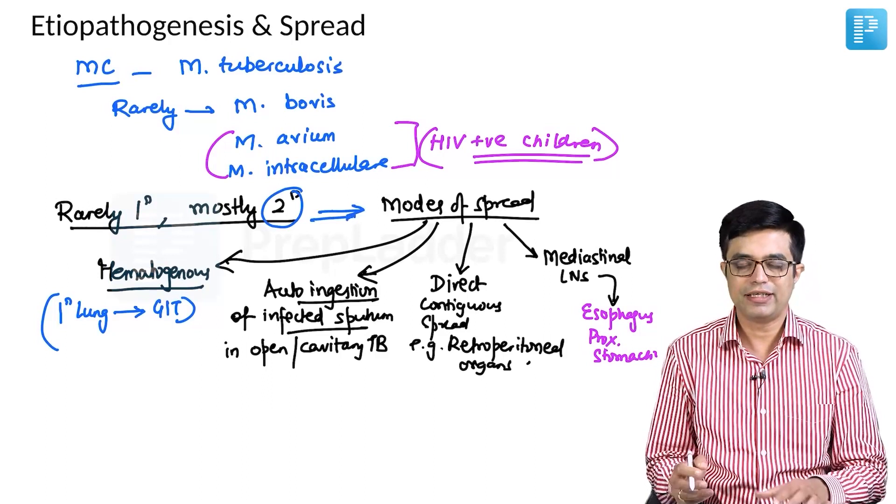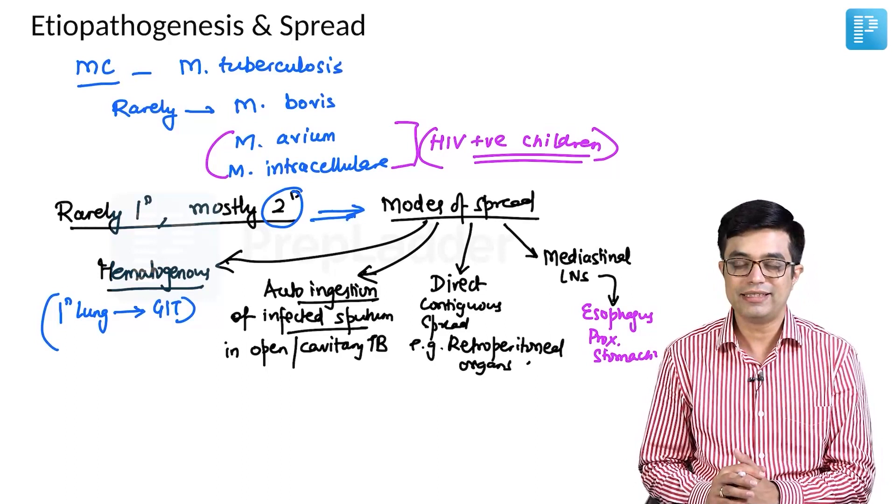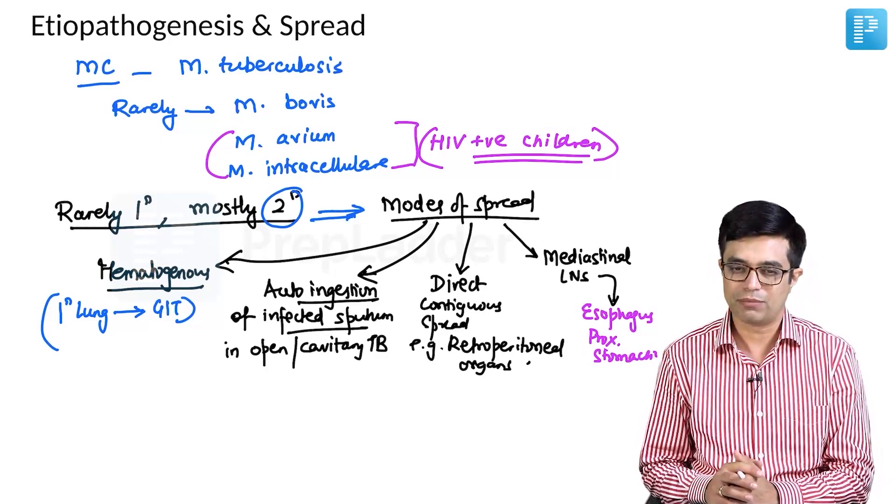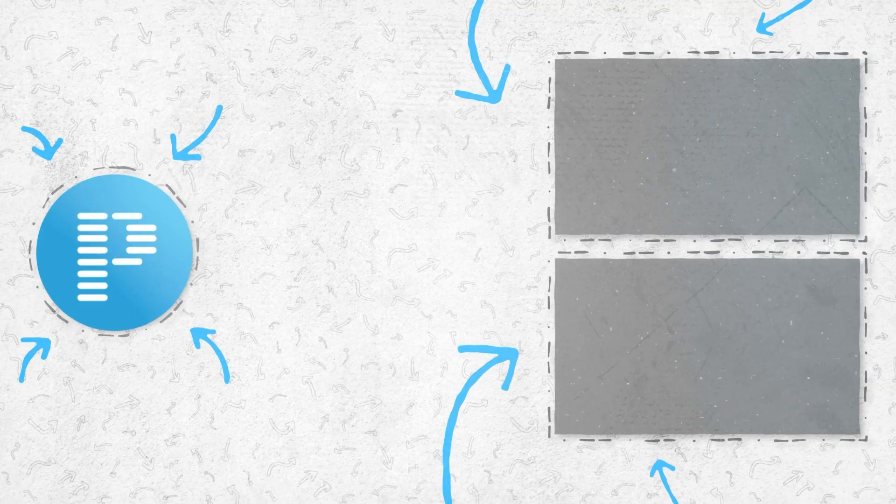Primary form is usually seen when there is ingestion of bacteria, basically that is more commonly seen in cases of Mycobacterium bovis. But for Mycobacterium tuberculosis, the common spread, these are the modes of spread that we find.